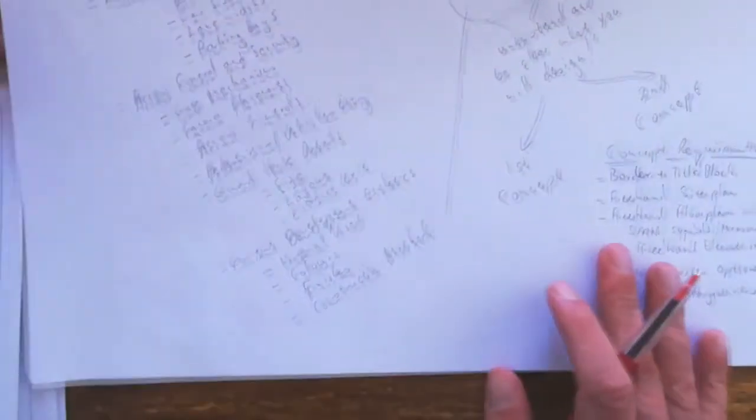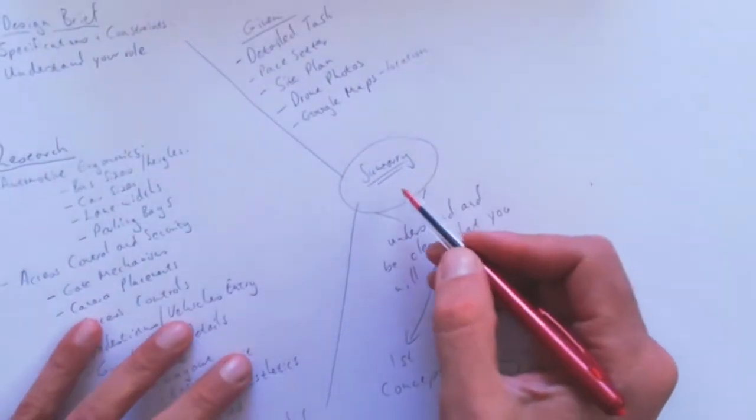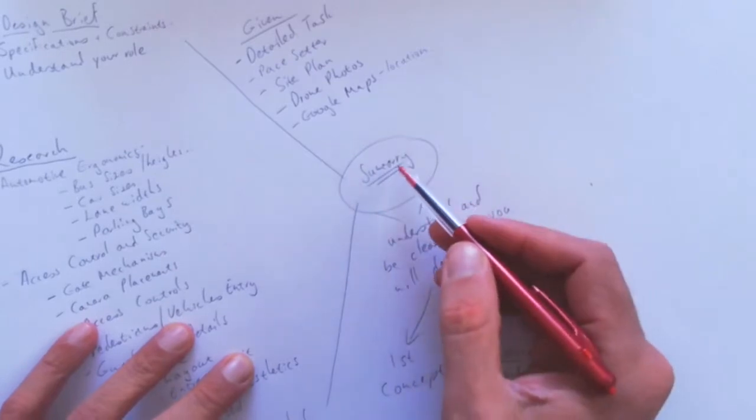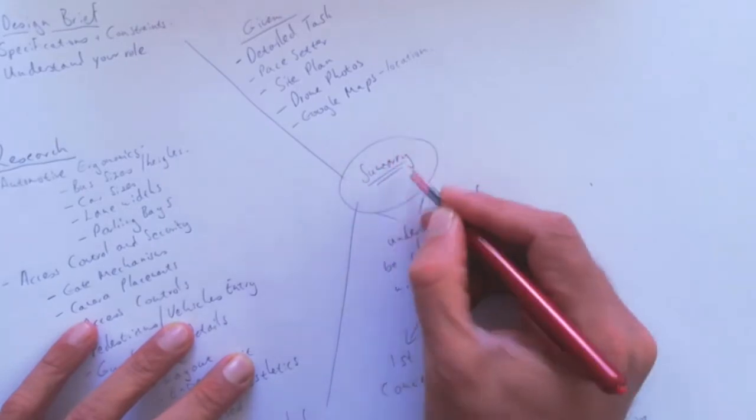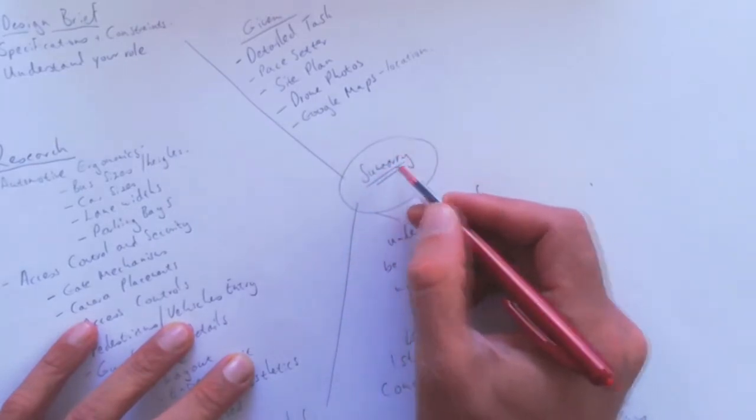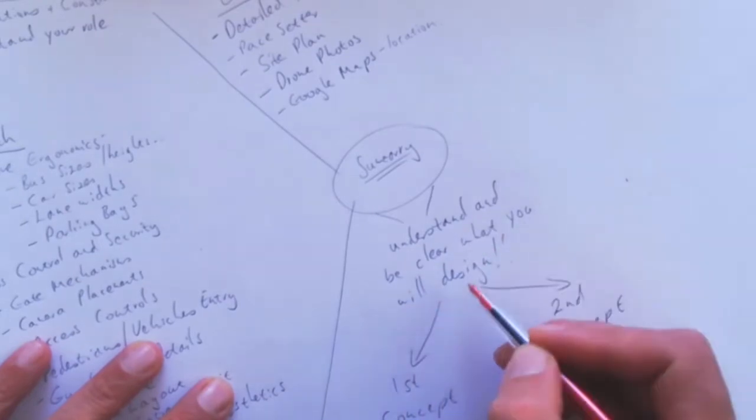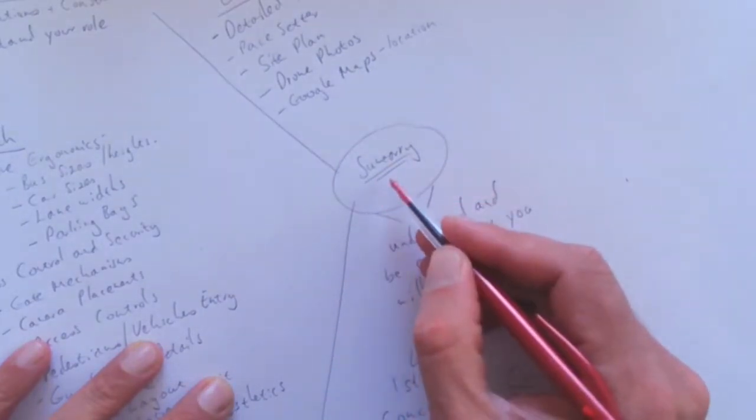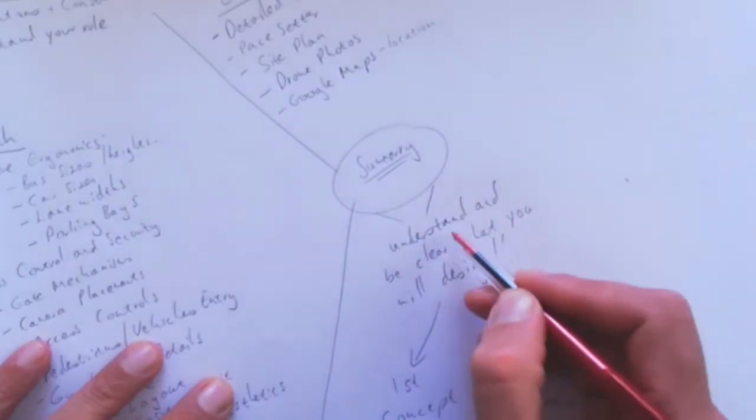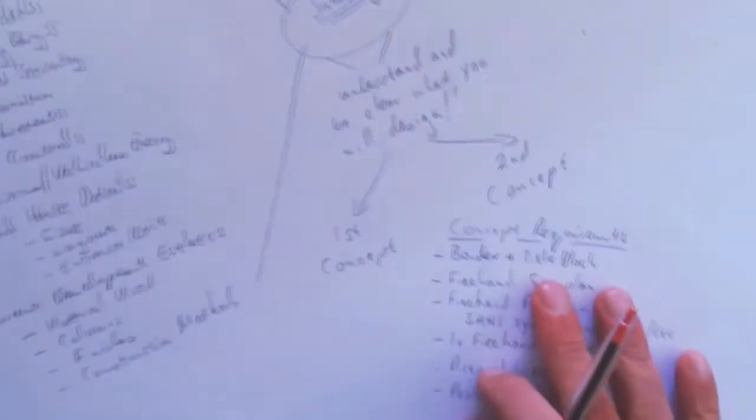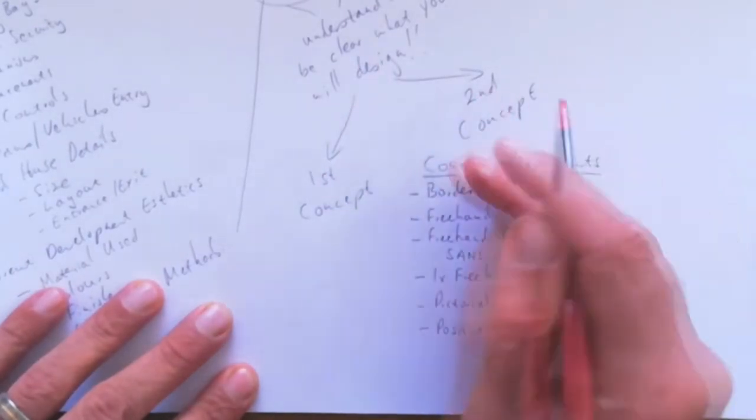Once you've done all this research, the design brief and research all plot to your summary. I always say to learners, make a summary at the end of your research that highlights the most important parts of what you need to consider when doing your concepts. It gives you understanding and helps you be clear on what you will design. Share it with someone or make notes, but it helps you understand what you're going to design because this will influence your two concepts.